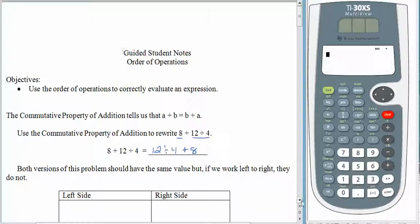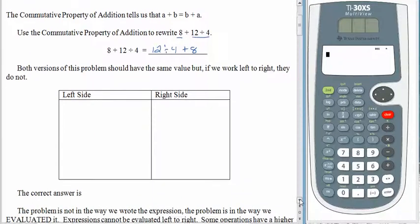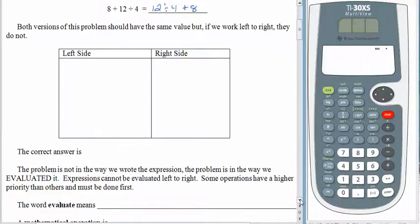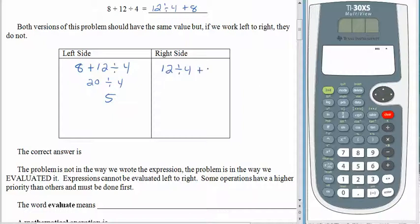We're supposed to get the same result. Changing the order in which you add numbers is not supposed to alter the result. Let's see what happens. We have 8 plus 12 divided by 4. 8 plus 12 is 20, dividing by 4 gives us 5. If we had 12 divided by 4 plus 8, 12 divided by 4 is 3, plus 8 is 11. And something is clearly wrong here.